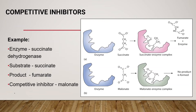Remember, this competitive inhibitor is usually structurally similar to the normal substrate. Thus it can fit into the active site and combine with the enzyme. However, it is not similar enough to substitute fully for the normal substrate in the chemical reaction. So the enzyme cannot convert it to produce molecules or products.